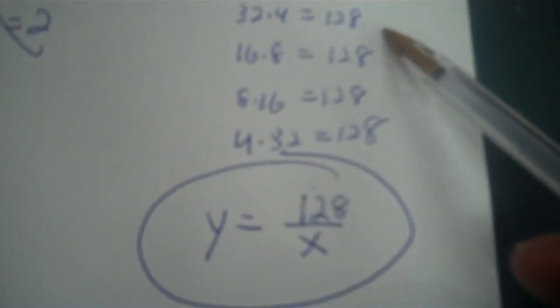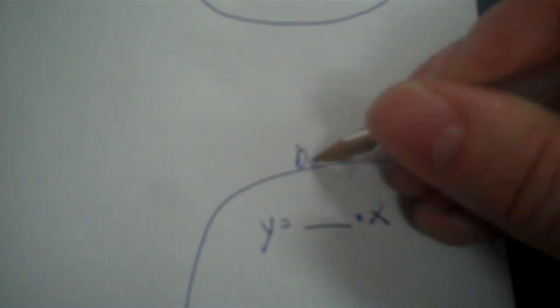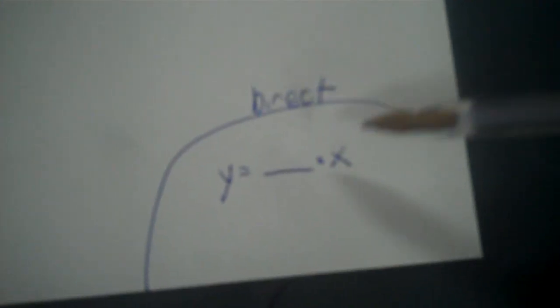By the way, if it's direct, if you get a division every time, it's y equals blank times x instead of whatever the constant of variation is divided by x. That is, if it's direct. It'd be the same thing, only instead of the constant that you got divided by x, it'd be the constant times x.